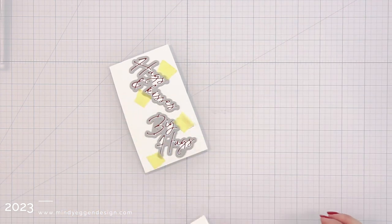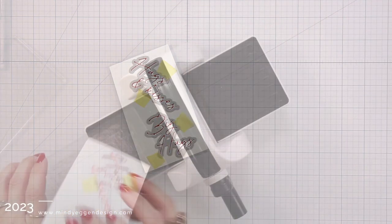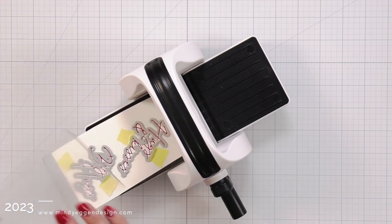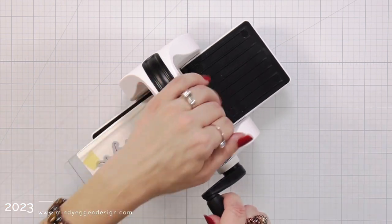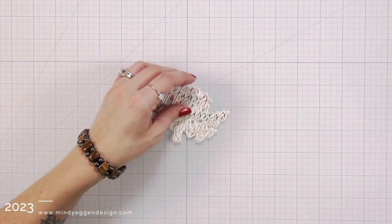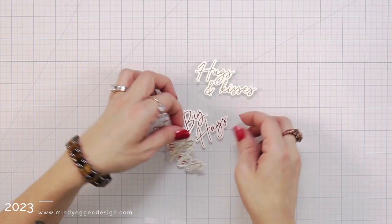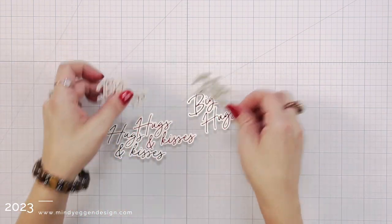So I'm using the coordinating die to die cut out all of those sentiments. And I'm going to do that with my bitty buzz cutter. So I just made sure that all of my cardstock pieces were trimmed down to fit inside of my bitty buzz cutter. And then here are all those sentiments foiled and die cut out.